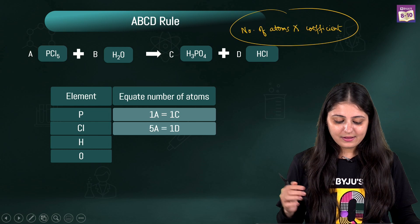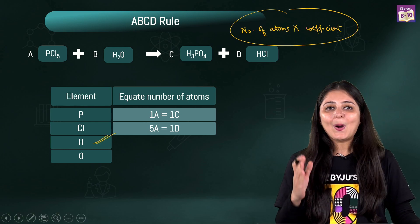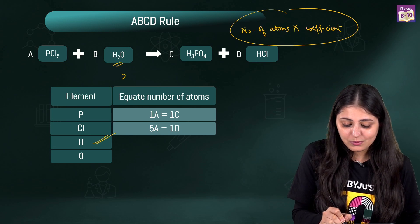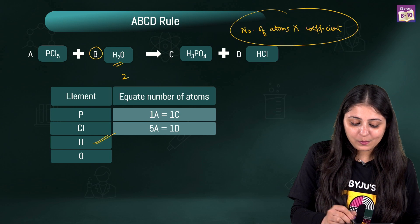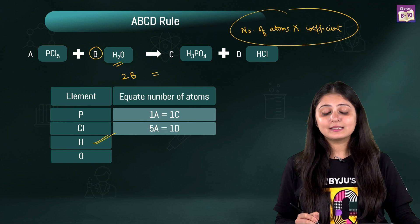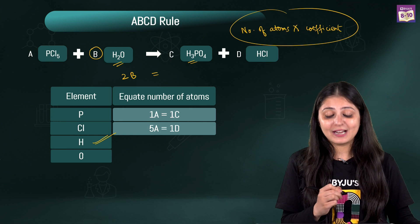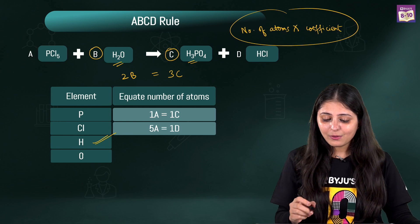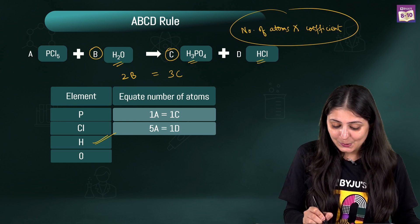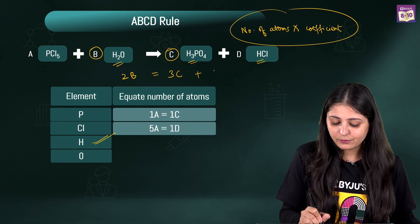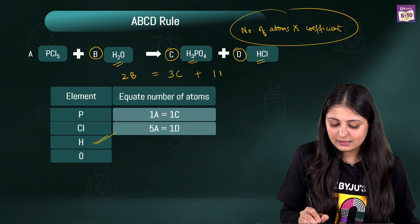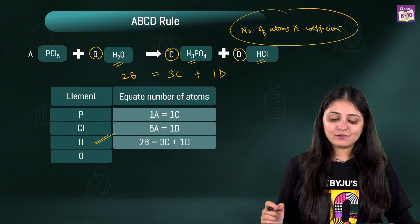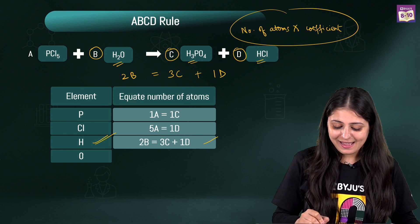Now for hydrogen: on the reactant side I see 2 hydrogen atoms with coefficient B. On the product side, I see 3 hydrogen atoms with coefficient C, plus 1 more hydrogen atom with coefficient D. So the equation is: 2B = 3C + 1D.